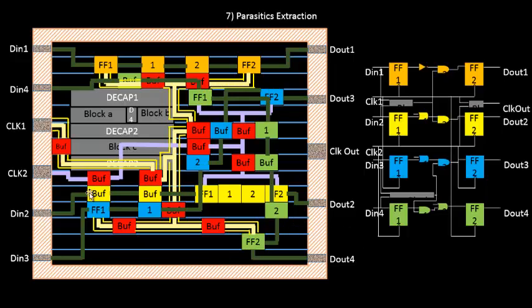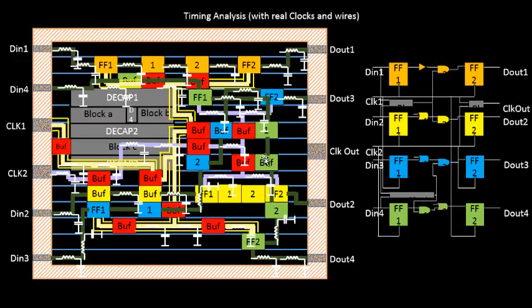After DRC cleaning, the next step is a complete parasitic extraction. Since we now have the data path routes, clock routes, shields, and everything in place, it makes sense to do a full parasitic extraction at this stage. The resistance and capacitance of the entire chip will be extracted — all routes and everything will be captured. Then we do a final round of timing analysis with the extracted parasitics, using real wires and real parasitics rather than estimations. The final timing analysis looks at real clocks, real clock wires, and real data path wires.